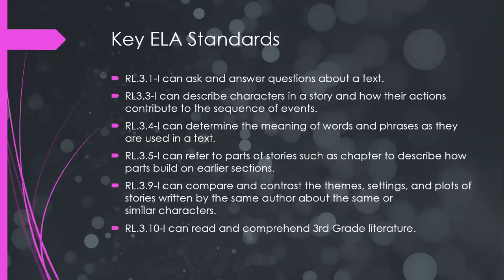So each day, Mrs. Faulkner and I are going to try to read two chapters. We'll refer to specific chapters, and as you look in your packet, they're divided up by chapters. RL 3.9 — I can compare and contrast the theme, settings, and plots of stories written by the same author about the same or similar characters. Ms. Stuff is also reading you a book — James and the Giant Peach — so think about how they're similar and different. And our last standard, RL 3.10 — I can read and comprehend third grade literature. That's a key final standard we're going to use to finish up the year.